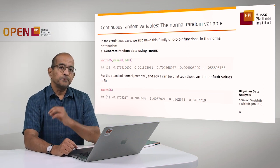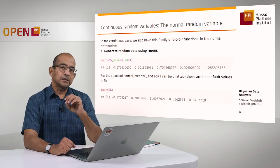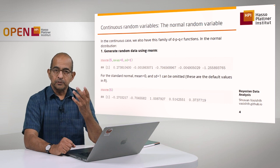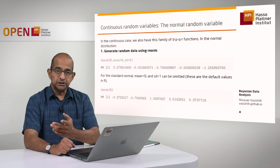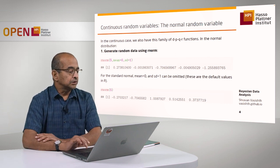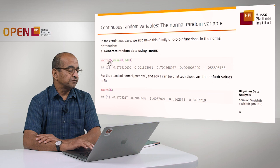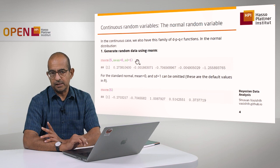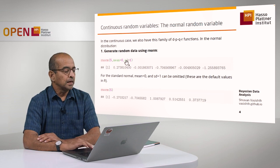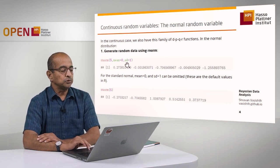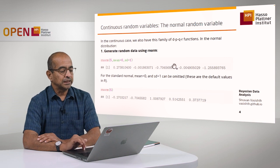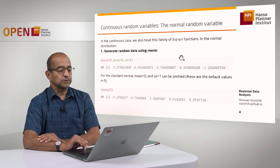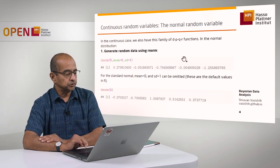You can generate random data from a normal distribution using the rnorm function. Here's an example: I'm generating five randomly generated data points from the standard normal. I could have chosen any value for mu and for the standard deviation and I would get appropriate samples from that particular distribution.